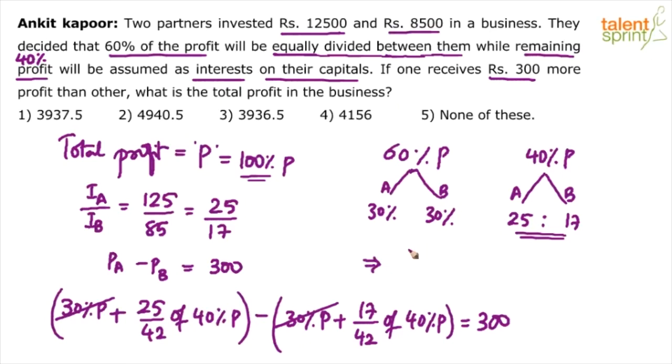Our equation will be: 8 by 42, because 25 by 42 minus 17 by 42 gives 8 by 42, into 40%, which is 2 by 5. Let's take it as a fraction. 40% of P is common: 2 by 5 into P equals 300.